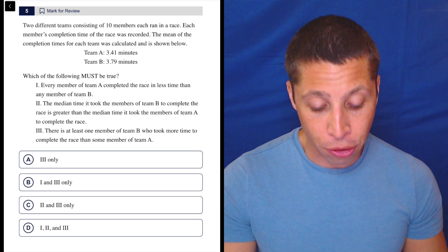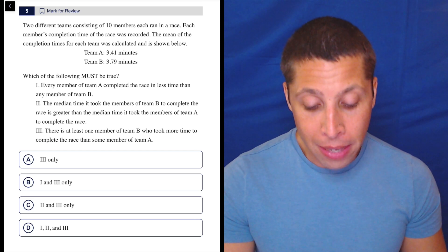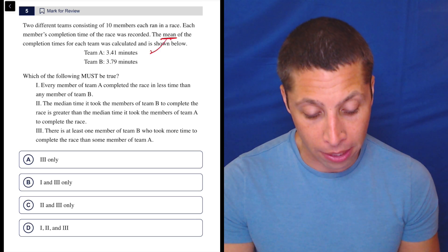Two different teams consisting of 10 members each ran in a race. Each member's completion time of the race was recorded. The mean of the completion times for each team was calculated and shown below. Team A: 3.41 minutes, Team B: 3.79 minutes. So these are the means.